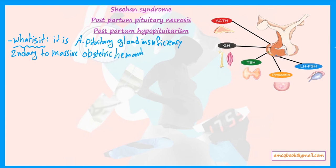During pregnancy, increased hormone secretion by the anterior pituitary gland causes it to enlarge, requiring more blood supply. If massive hemorrhage and shock occur during labor, this leads to ischemia and necrosis of the anterior pituitary, resulting in insufficiency of its hormones.